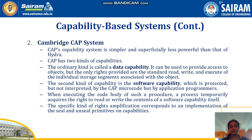Data capability only provides read, write, and execute access rights for users. Based on these read, write, execute access rights, the user can maintain or protect their files. The second kind is software capability, which protects software components but is not interrupted by microcode application programs. When executing the code, a process temporarily acquires a right to read or write the content of the software capability itself.